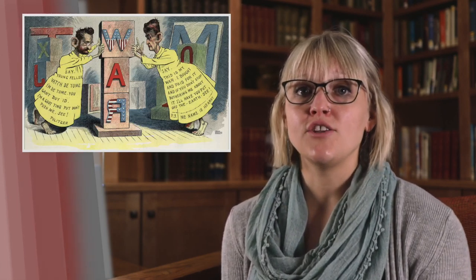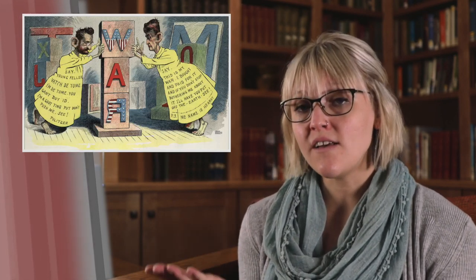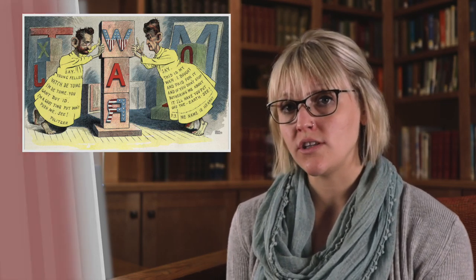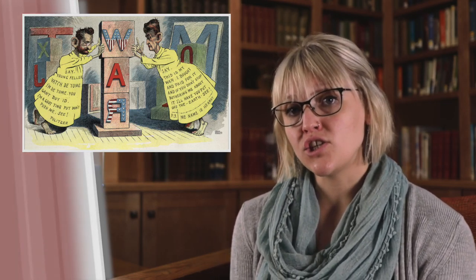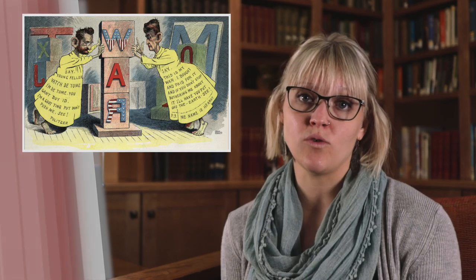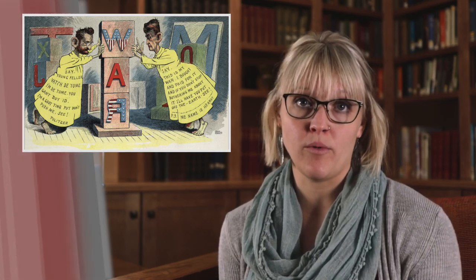In early America, Thomas Jefferson and John Adams, when running as political opponents, smeared one another in the newspapers. The newspapers themselves went through a period in the 1890s where they employed yellow journalism, sensationalizing and hyperbolizing stories to sell papers.